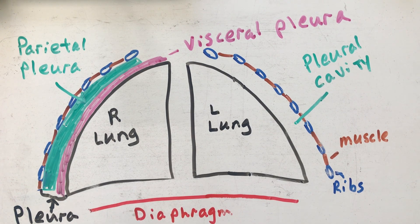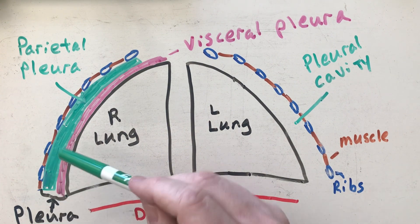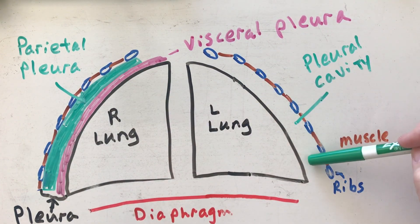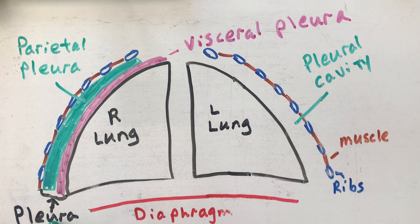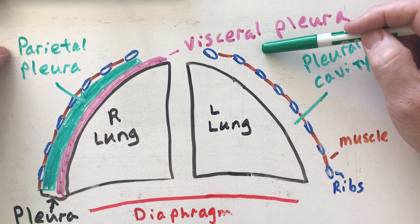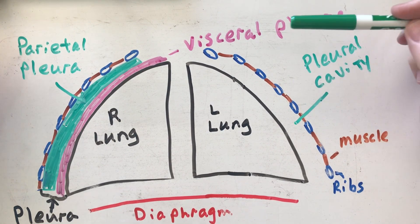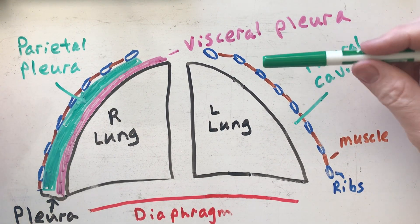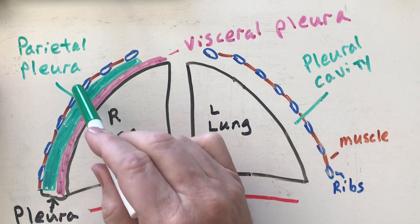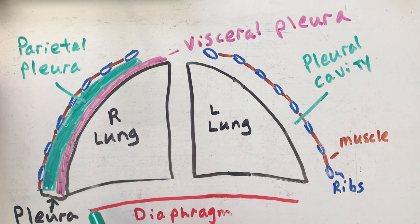Just to reiterate: my pleura is in the pleural cavity, which is the space in here. The pleura is a membrane made up of two parts — the parietal pleura and the visceral pleura. Their job is to reduce friction between the lung and the ribcage as you breathe in and out.